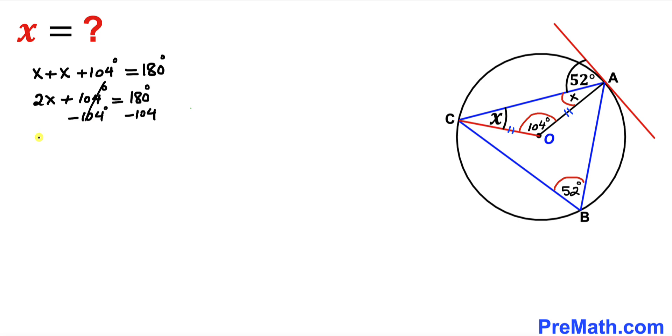This is gone. So therefore our 2x turns out to be equal to 76. Let's divide both sides by 2 to isolate x.